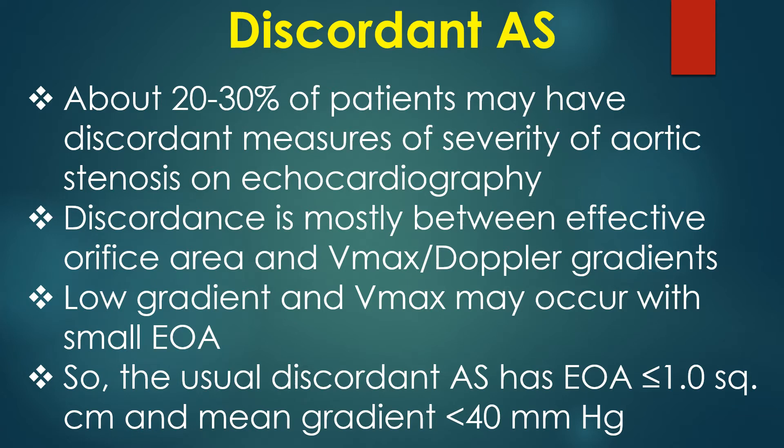About 20 to 30% of patients may have discordant measures of severity of aortic stenosis on echocardiography. Discordance is mostly between effective orifice area and Vmax or Doppler gradients. Low gradient and Vmax may occur with a small effective orifice area. The usual Discordant AS has an effective orifice area less than or equal to 1 cm² and a mean gradient less than 40 mmHg.